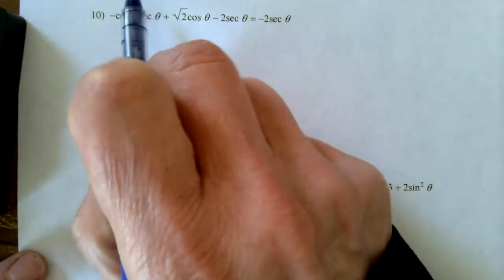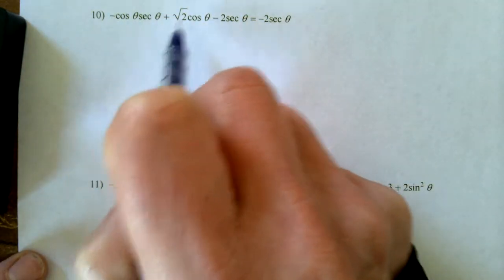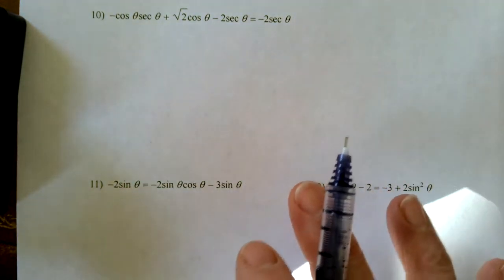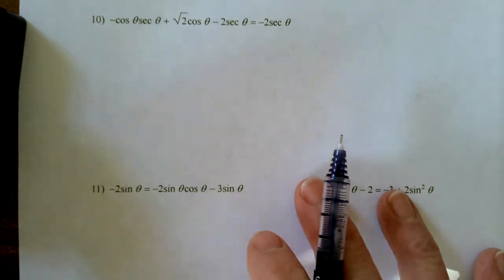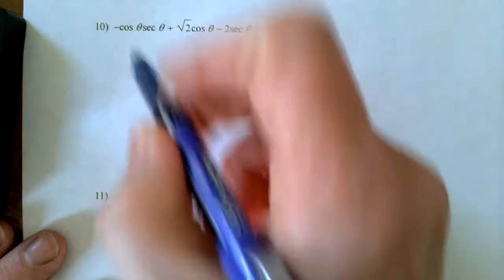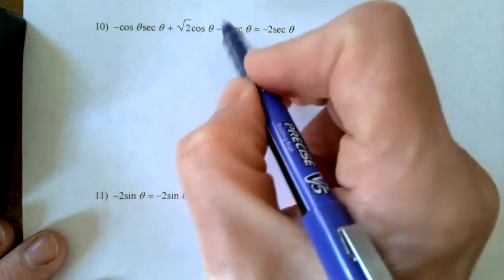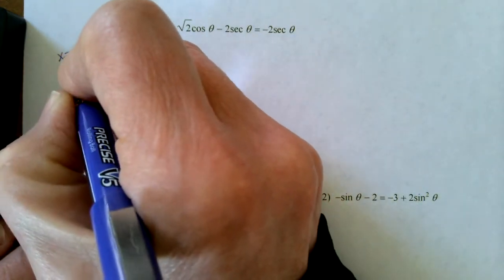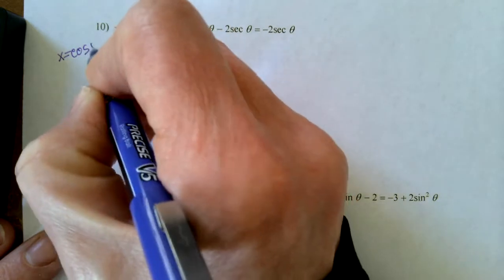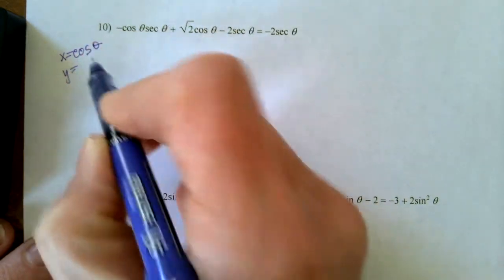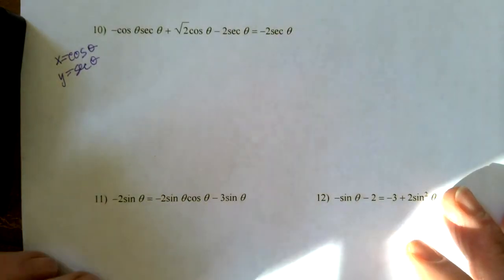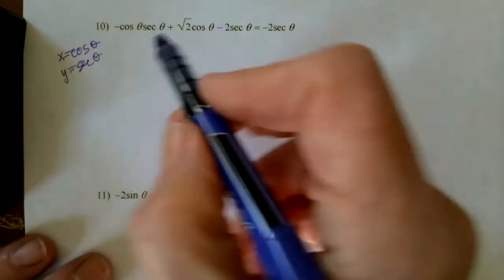As was mentioned earlier, what I like to do, especially if I have two different trig functions, but even if I don't, is assign a variable for each of the trig functions in there. Just put something in there that you can replace it, whatever variable you want.